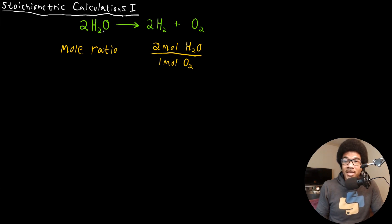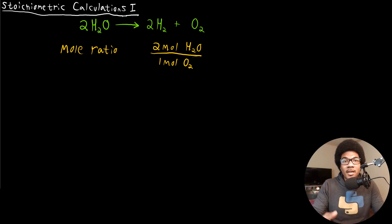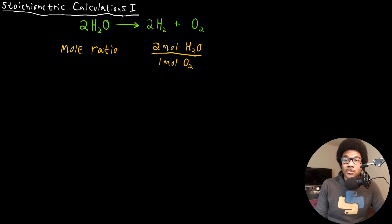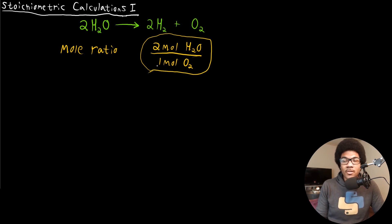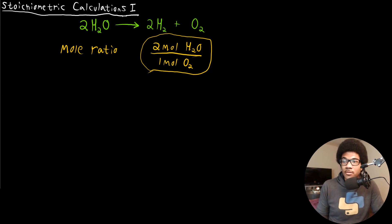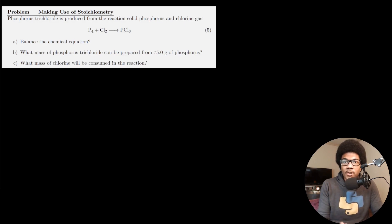These mole ratios are going to be crucial in order to do any stoichiometric calculations. What they allow you to do is relate the reactants to the products. Once we're able to get everything on the same footing — the same footing of moles — we can interchange between different compounds by using their mole-to-mole ratio. So for every two water molecules, you'll produce one O2 molecule — a two-to-one mole ratio. You have to balance the chemical equation correctly; starting with the balanced equation, you'll get the right mole ratios. So let's look at an example of a stoichiometric calculation.